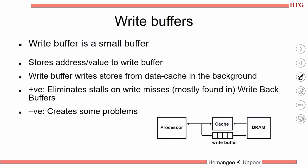The write buffer sits in parallel to the cache and carries data to the main memory. It contains the address and the value to be stored. The advantage is it eliminates stalls on misses, because the processor need not wait — as soon as there is a miss the data is transferred to the write buffer and the cache and processor are free to continue. But having an additional copy of data in a different buffer introduces some problems that need to be addressed.